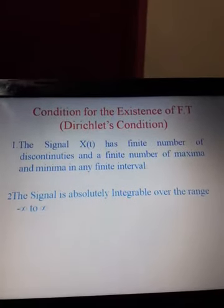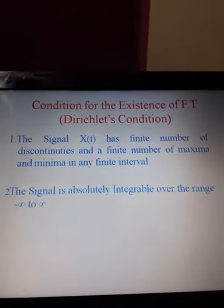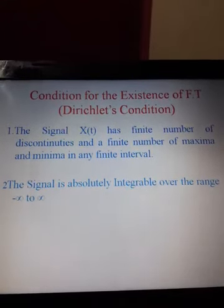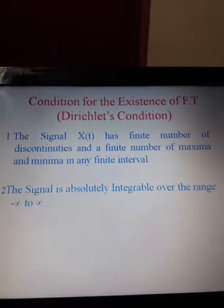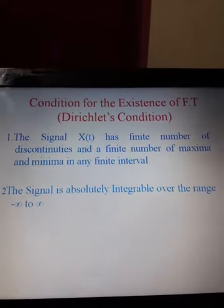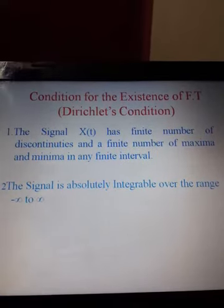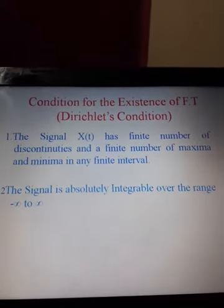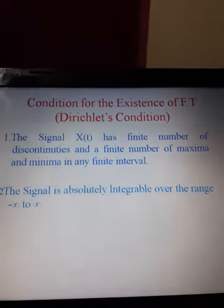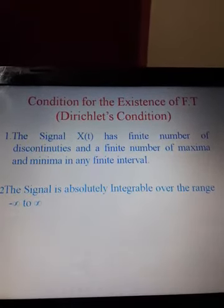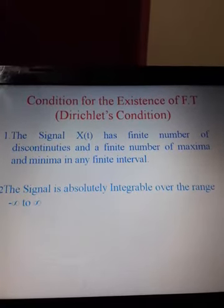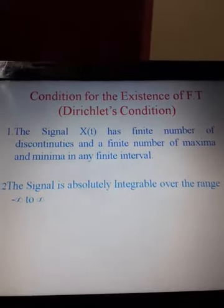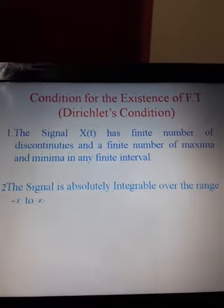Conditions for the existence of the Fourier transform — Dirichlet's conditions. First, the signal x(t) must have a finite number of discontinuities and a finite number of maxima and minima in any finite interval. Second, the signal must be absolutely integrable over the range minus infinity to infinity; that is, the integration of |x(t)| dt must be less than infinity.